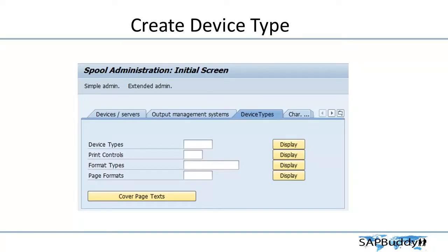For this we can create our own device type, or we can copy the device type which is existing in the SAP system and modify it. That is the easiest way to do it. For example, in case of label printers, we can create our own device type because label printers mainly have all the customized printing.